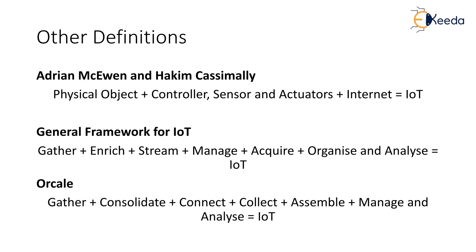The general framework of IoT gives the idea of: gather, enrich, stream, manage, acquire, organize, and analyze the data — all taking the data with IoT via internet connectivity to a data center, enterprise, or cloud network. At level one, devices use sensors to gather information. At level two, data is enriched — for example, through transcoding at the gateway. Transcoding means encoding or decoding before data transfer between two entities.